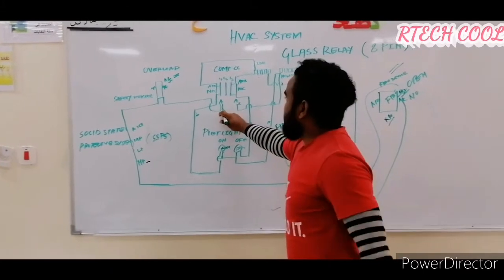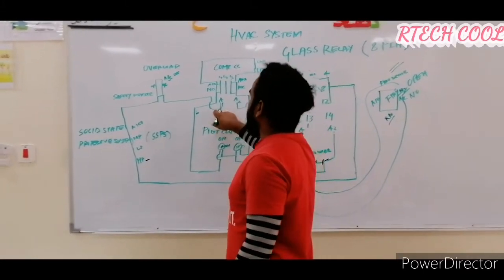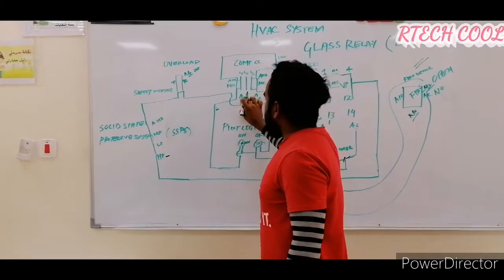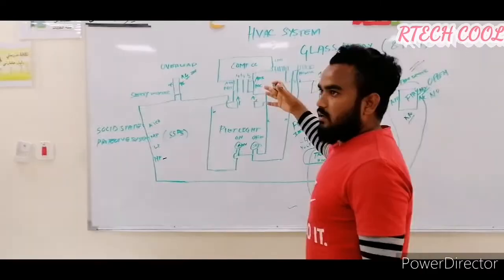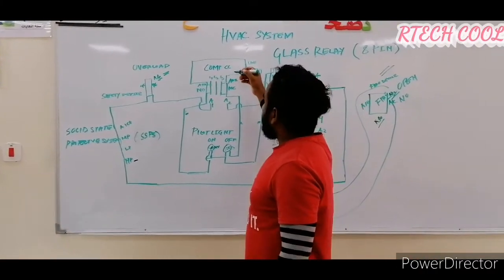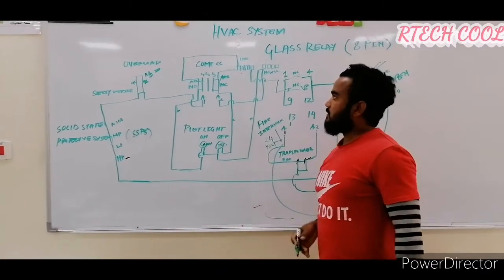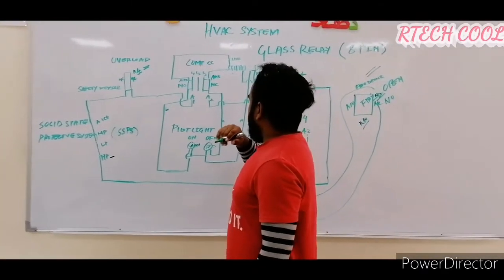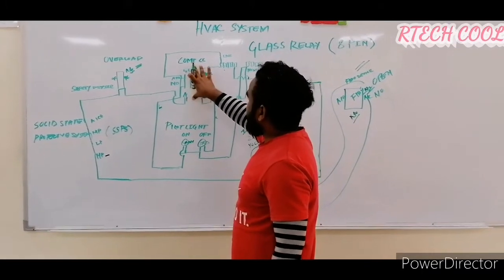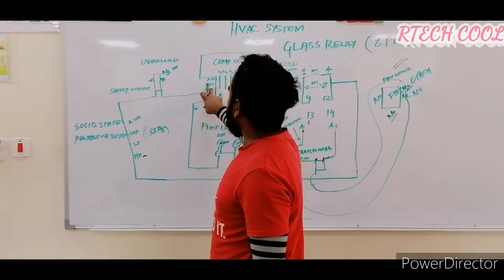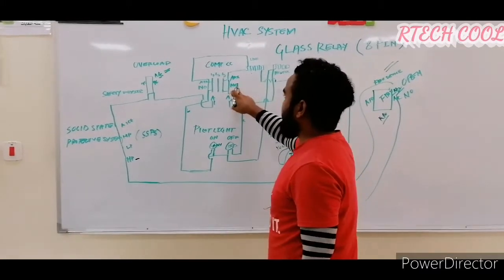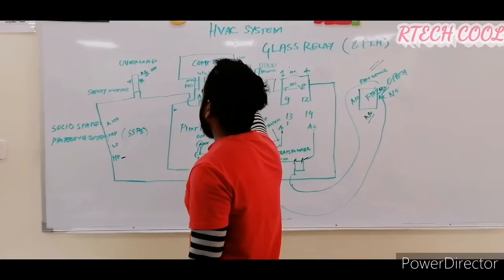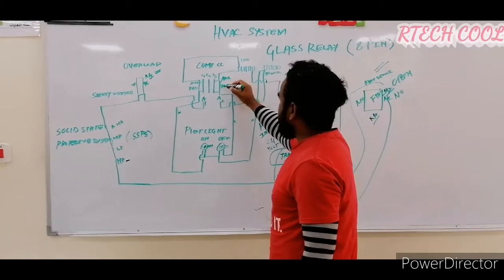The signal comes to the contact voltage — A1 of the compressor contactor — as the command or demand voltage. If this arrives, it will energize the compressor contactor. In the compressor contactor, we use auxiliary contacts — NO point and NC point. When the contactor is energized, this NO will become NC, and NC will become NO. Whenever a contactor or relay coil is energized, NC becomes NO and NO becomes NC.